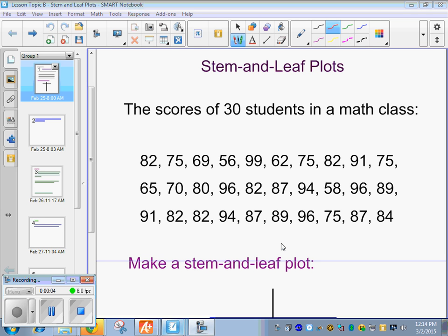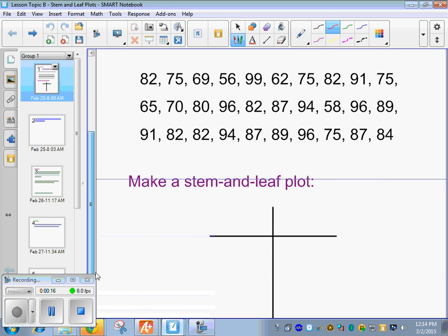Alright, so this one says you've got 30 students in a math class, and these are the test parts. And we're going to make a stem-and-leaf plot. We're going to put the numbers in order from least to greatest when we do a stem and leaf.